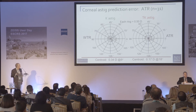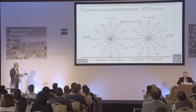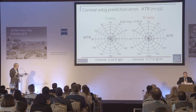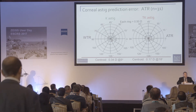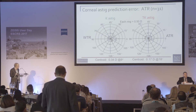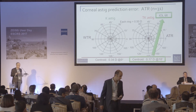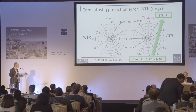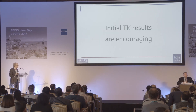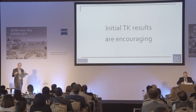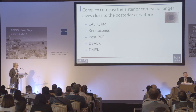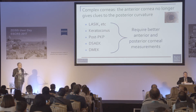Here are our results on a double-angle plot, where with-the-rule errors are on one side and against-the-rule errors on the other. Using just the front corneal measurements, we had an error of 0.34 diopters at 9 degrees. With the TK measurement, we get 0.17 diopters at 18 degrees — reducing the error by half. The remaining 0.15 diopters is probably accounted for by IOL tilt. These are encouraging initial results, though we have more work to do with oblique, with-the-rule cases, and larger numbers.